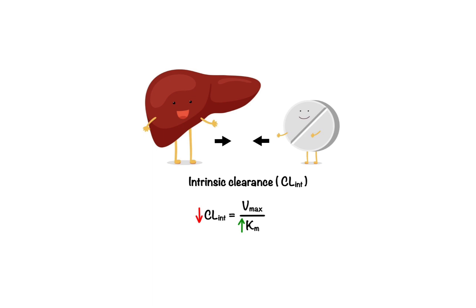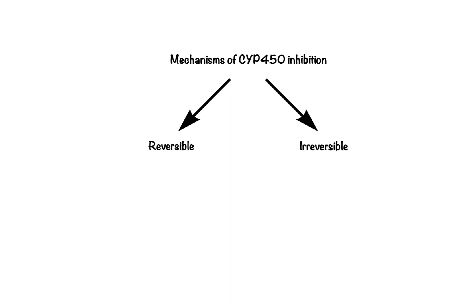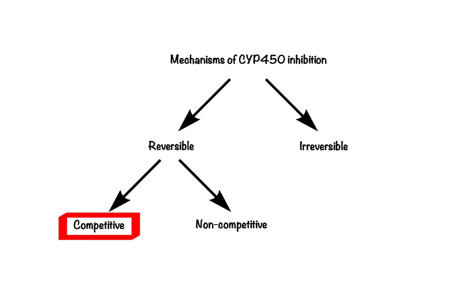Drug interactions resulting from drug metabolism inhibition are common because many drugs are eliminated primarily through CYP450-mediated metabolism and might compete for the same CYP450 active site. As previously mentioned, mechanisms of CYP450 inhibition can be classified as reversible or irreversible. Reversible inhibition is a result of rapid association and dissociation between the substrate drug and the enzyme, and can be classified as competitive or non-competitive. Drug interactions associated with reversible competitive inhibition are caused by the ability of a single CYP450 isoform to metabolize multiple substrates.